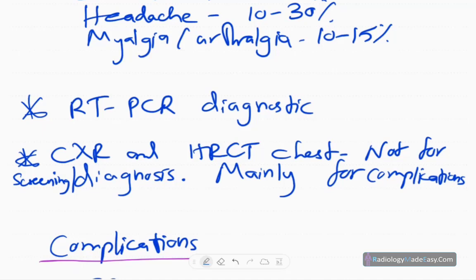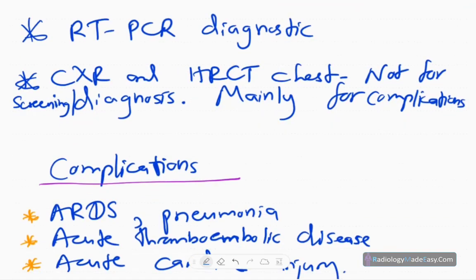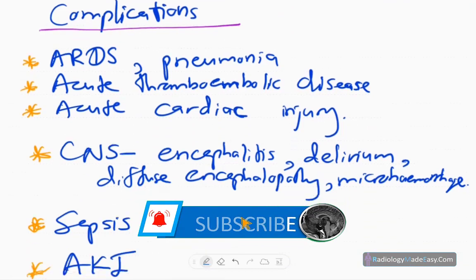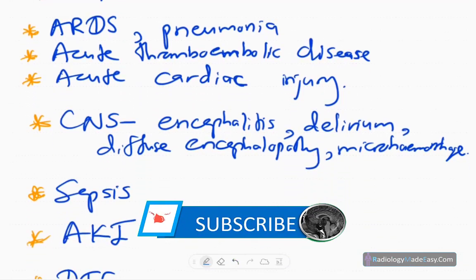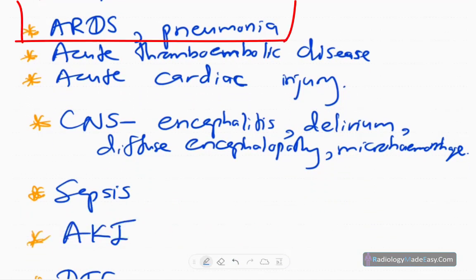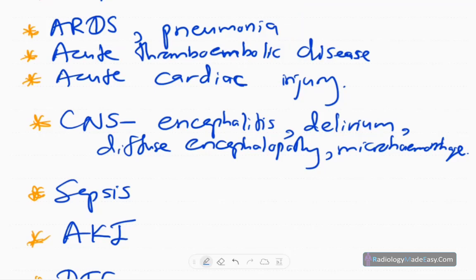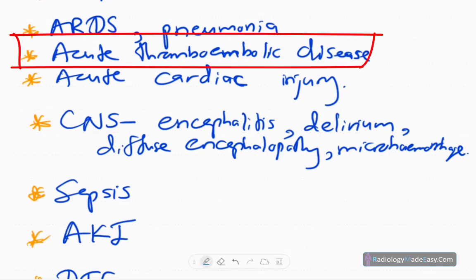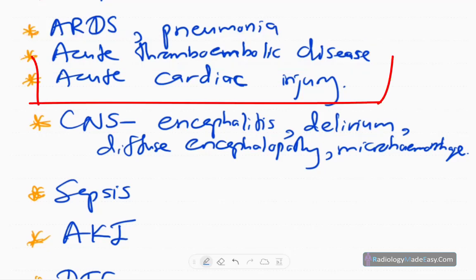Complications of COVID-19 include acute respiratory distress syndrome, pneumonia due to secondary bacterial infections, and acute thromboembolic disease. It can also cause brain infarcts, acute cardiac injuries such as viral myocarditis, and ischemic problems due to vasculitis.